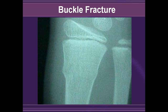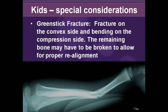This is an example of a torus fracture, where there has been stress and the bone has buckled. There is no actual lucent line seen across the bone itself. A greenstick fracture is a fracture on the convex side with bending on the compression side. The remaining bone may have to be broken to allow proper realignment. In this example, you can see at the apex of the area in question there is a fracture, but on the concave side there is no fracture seen — simply bending.